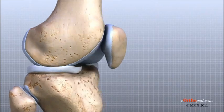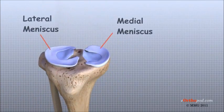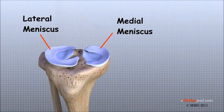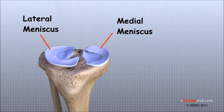Two special structures called menisci sit between the femur and the tibia. These are sometimes referred to as the cartilages of the knee, but the menisci differ from the articular cartilage that covers the surface of the joint. The two menisci of the knee are important for two reasons: first, they work like a gasket to spread the force from the weight of the body over a larger area, and second, they help the ligaments with stability of the knee.